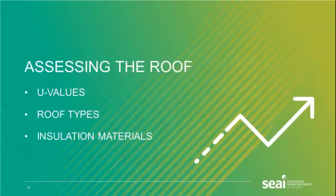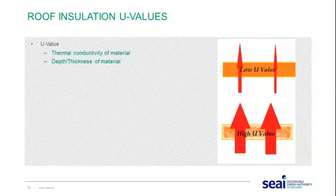We're going to move on to assessing the roof — in particular, U-values, roof types, and insulation materials. The U-value is determined by the conductivity and the depth or thickness of the material being used. The lower the U-value, the less heat transfers through that product; where you have a higher U-value, more heat transfers through.